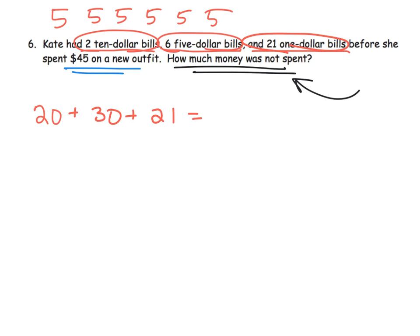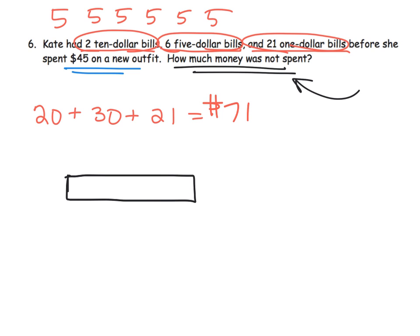We want students to think about number sense and be flexible with their numbers, not just blindly use an algorithm. So in mental math: we've got two tens, three tens, plus two tens — that's seven tens — plus the extra one, so the answer is seventy-one dollars. Kate had seventy-one dollars. Then she spent forty-five on the outfit. A tape diagram might show she had seventy-one, spent forty-five, and we ask how much is left.